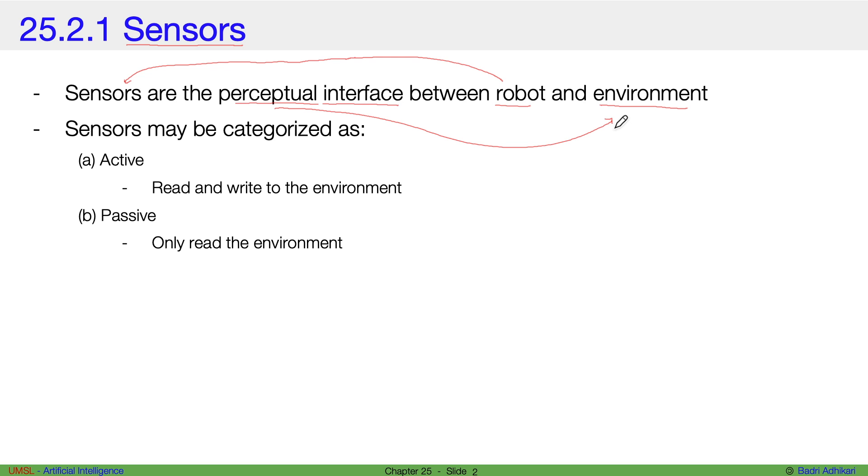Sensors may be categorized in two ways. One way to categorize sensors is to check if the sensor is an active sensor or a passive sensor.